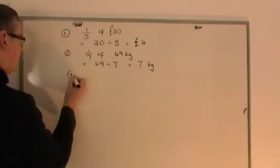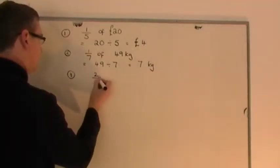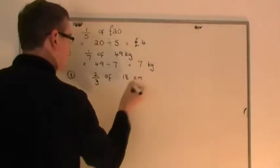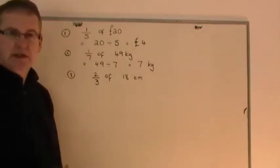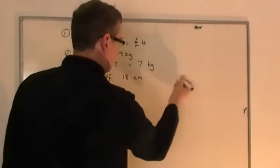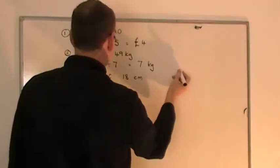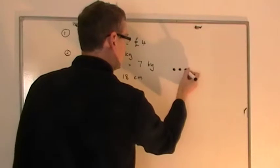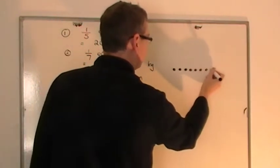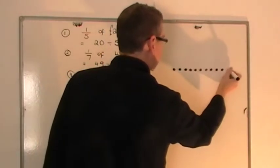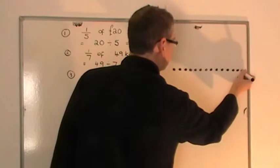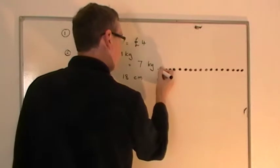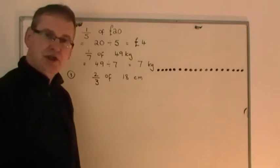However, some people get a bit confused when they come onto ones such as this. Let's say you have two-thirds of something — two-thirds of 18 centimetres. Let me give you a little demonstration with a picture. Let's say I have 18 dots — counting up to 18 here.